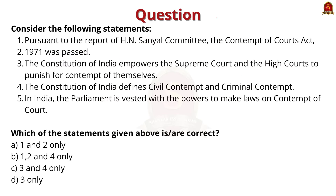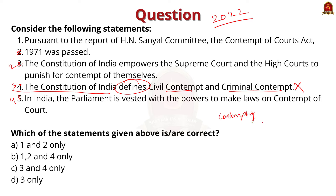This question is about contempt of courts from 2020. Four statements are given. If you eliminate the third statement, you can almost arrive at the answer. The third statement says the Constitution of India defines civil contempt and criminal contempt — this is incorrect because the Contempt of Courts Act 1971 defines both civil and criminal contempt, not the Constitution. Civil contempt refers to willful disobedience to any judgment of the court.